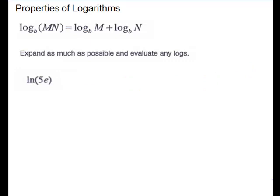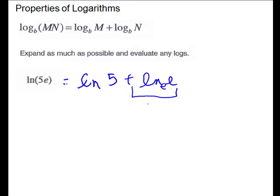Next we have the natural log of 5e. This follows the same rule — it's log base e of a product — so we can break it apart into the sum of the logs: natural log of 5 plus natural log of e. The natural log of e, because this is base e of e, equals 1, so that piece simplifies. The other piece does not. So natural log of 5 plus 1 is our answer.